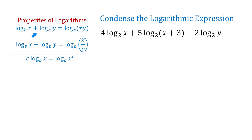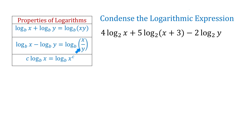With the product rule, we write a sum of log base b of x and log base b of y as a single logarithm of the product of x and y. With the quotient rule, we write the difference of log base b of x and log base b of y as a single logarithm of the quotient x over y.